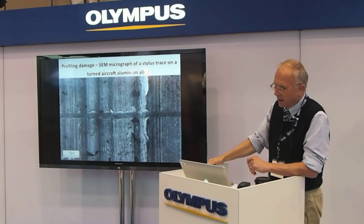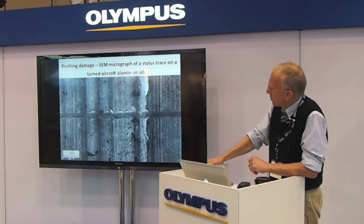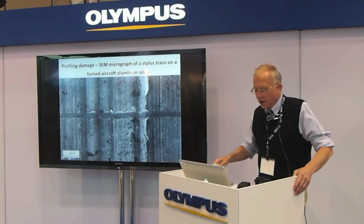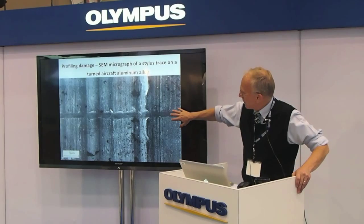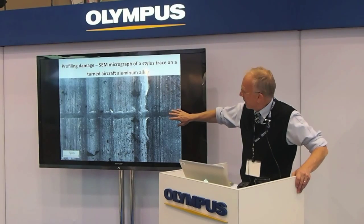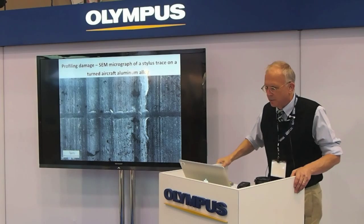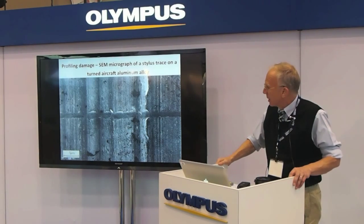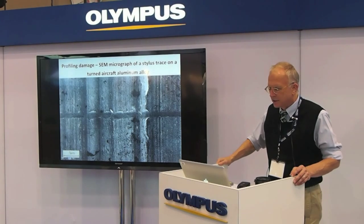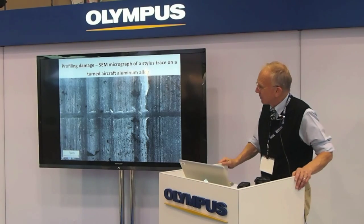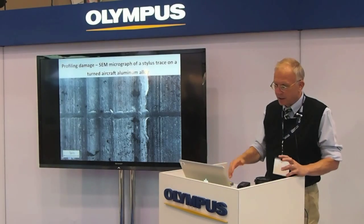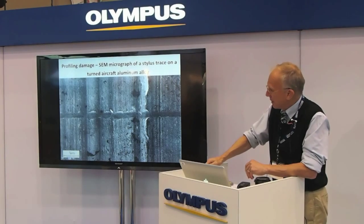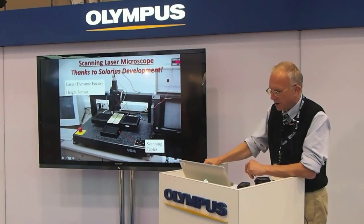This is a scanning electron micrograph I took at the Swiss Federal Institute of Technology in Lausanne. You can see how this aircraft aluminum alloy — one of the harder aluminum alloys — is damaged by the stylus trace. This is a very fine scale; you have trouble seeing it unless it's on a highly polished piece. You never notice it on a machine part, and mostly people consider stylus measurement to be a non-destructive test — but that's not true if you're dealing with a very fine surface.